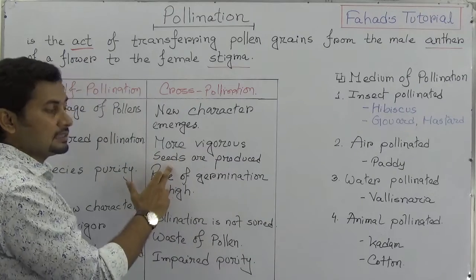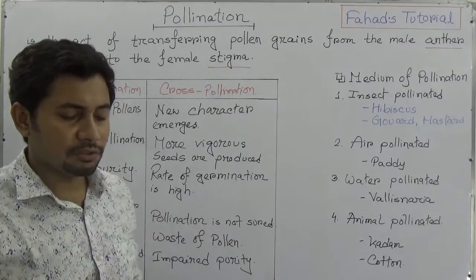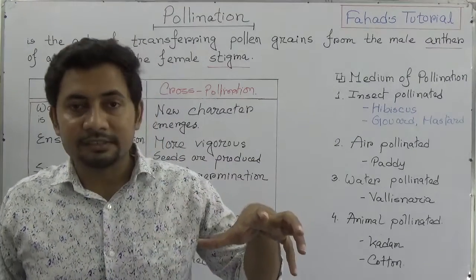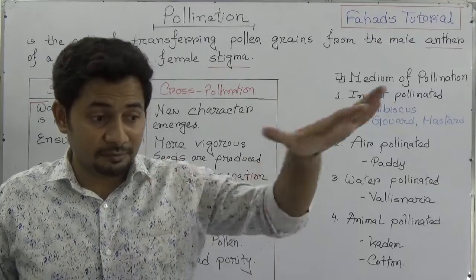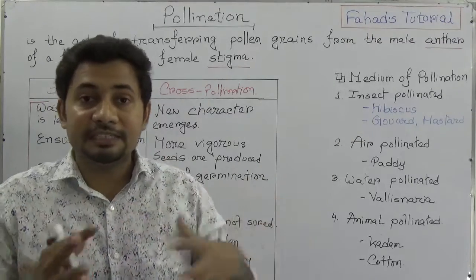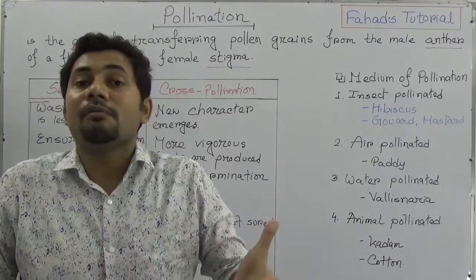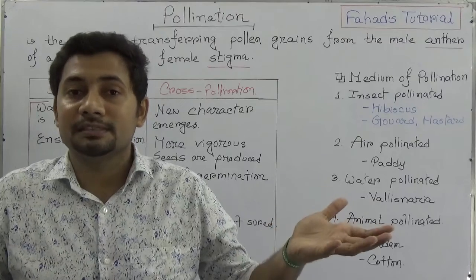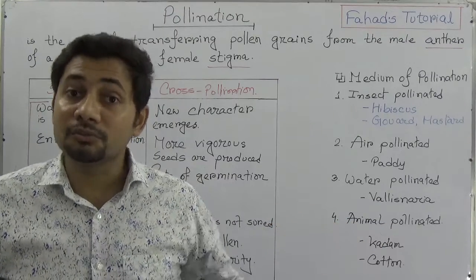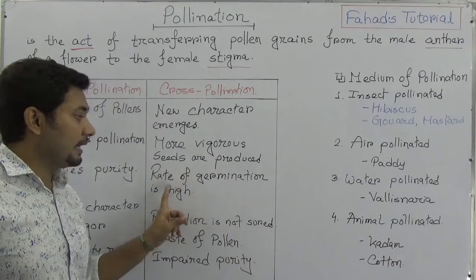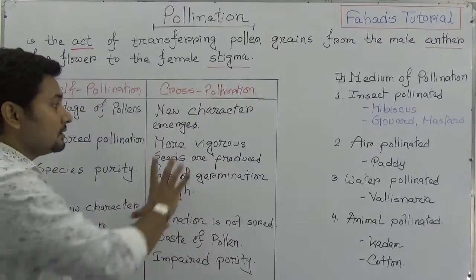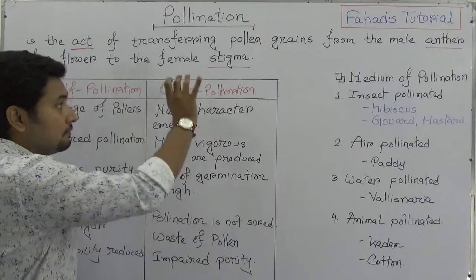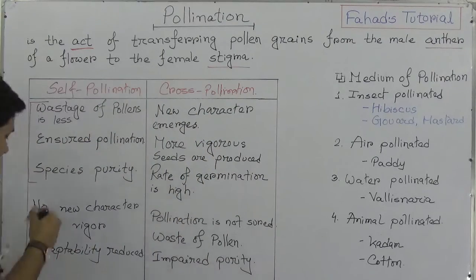More vigorous seeds are produced through cross-pollination, because different genetic materials from flowers of the same species are mixed. That is why more vigorous seeds are produced, and the rate of germination is high. These are the advantages of cross-pollination, which are the disadvantages of self-pollination.